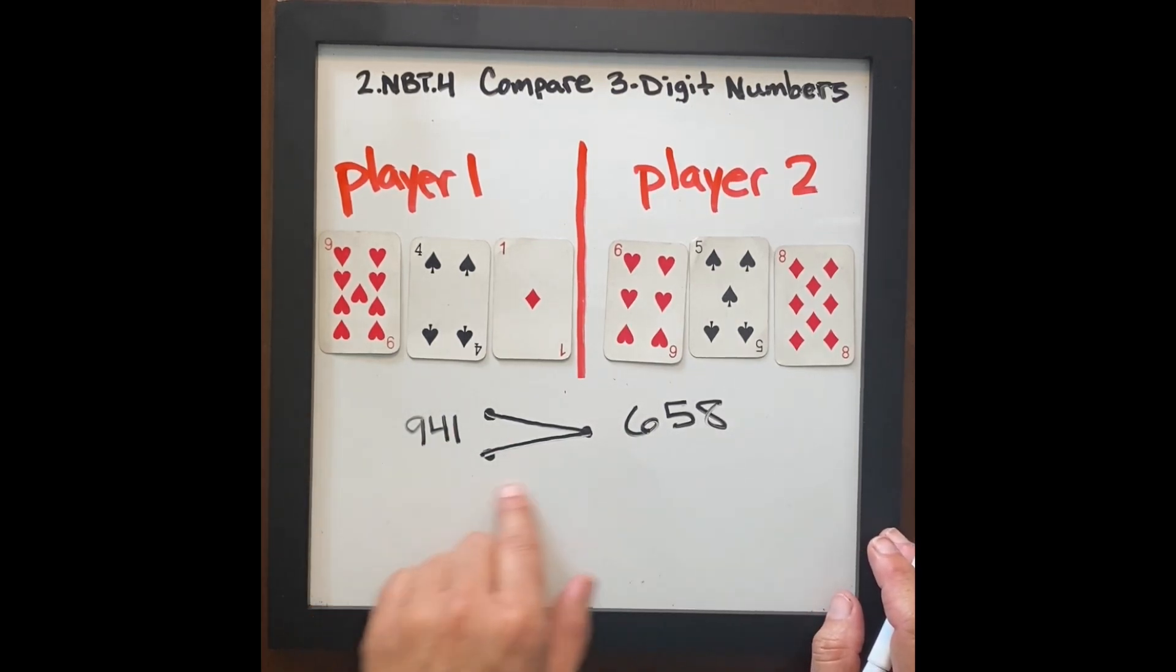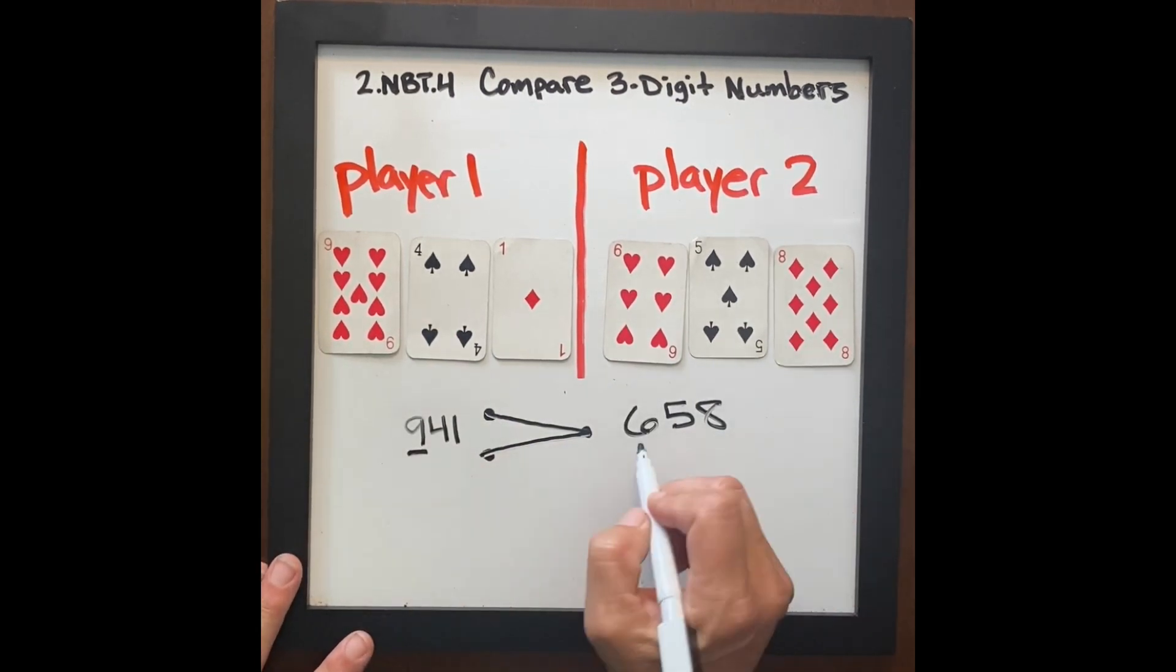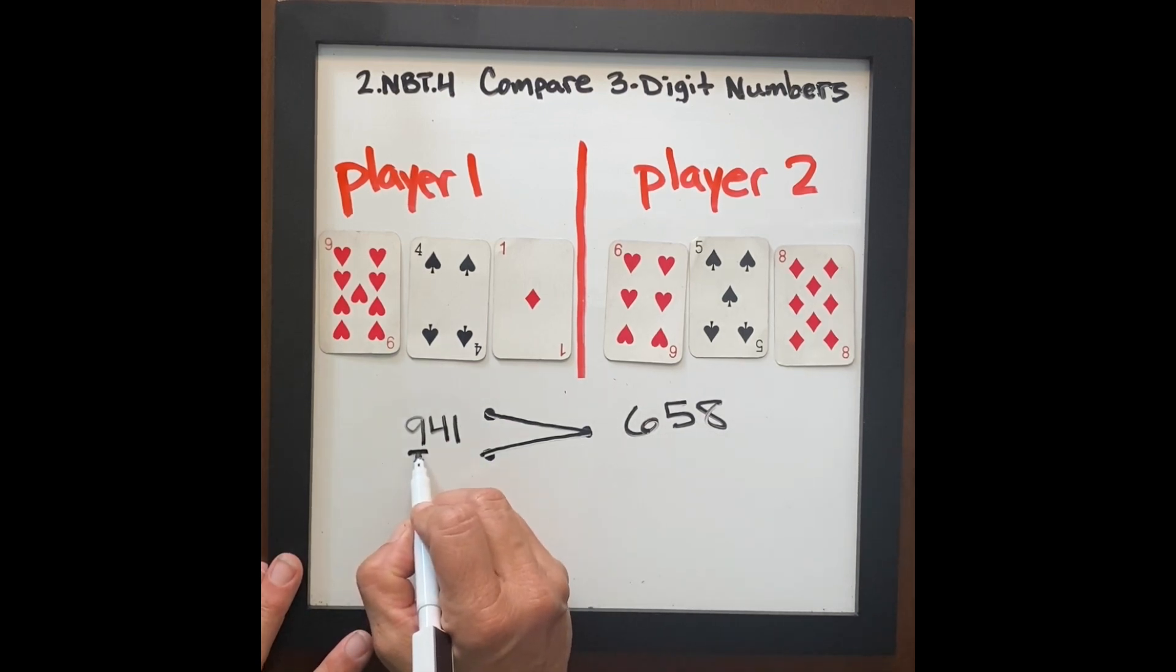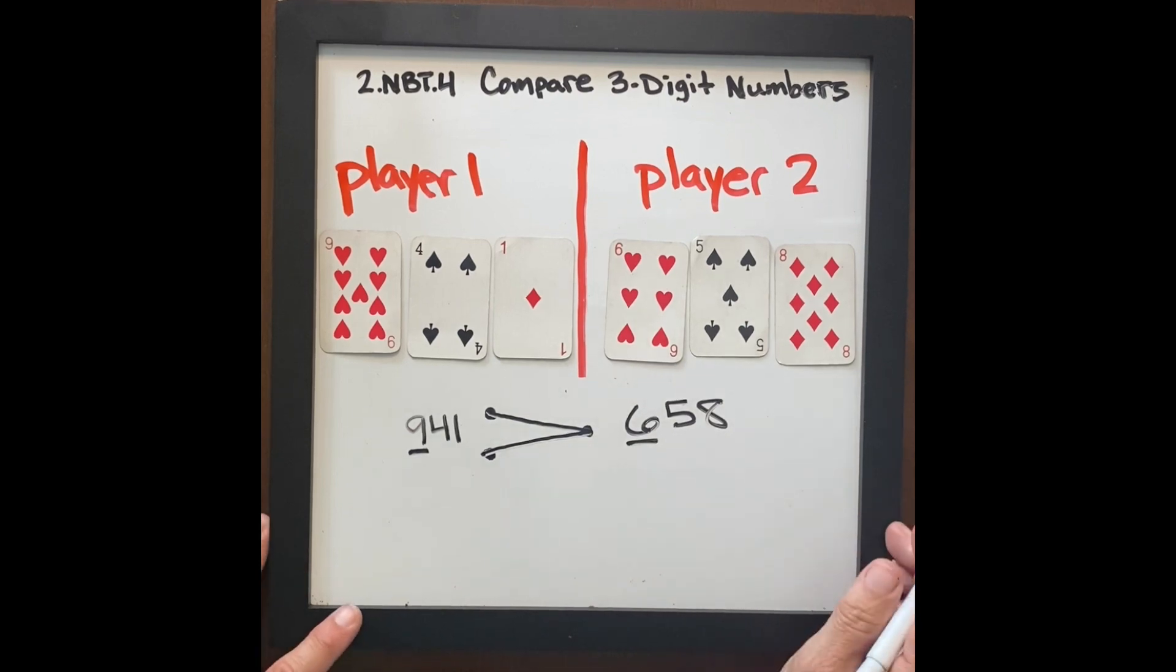The next step with this activity is we want students to underline, where did you win? Where was the win? Where did you know when these cards were drawn out that you won right away? The person is going to underline 9 because it was 900 and here it was 600.